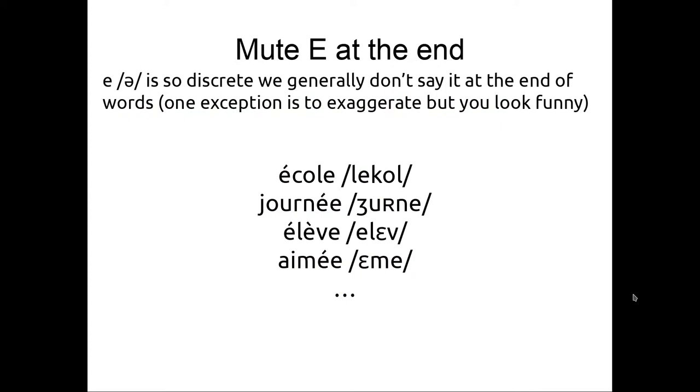Here we have some spelling rules to help you pronounce things correctly. If you have an E at the end, it's mute. Don't say it. For example here, école. We don't say école. We don't say école. Here we have journée. Here we have élève. If you say it, you will be understood but you will sound a bit funny.